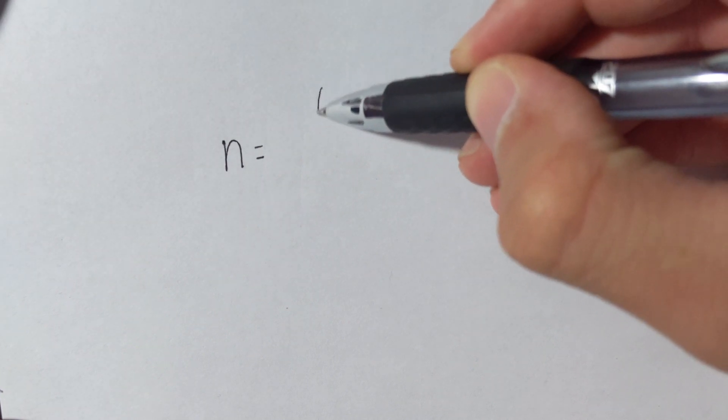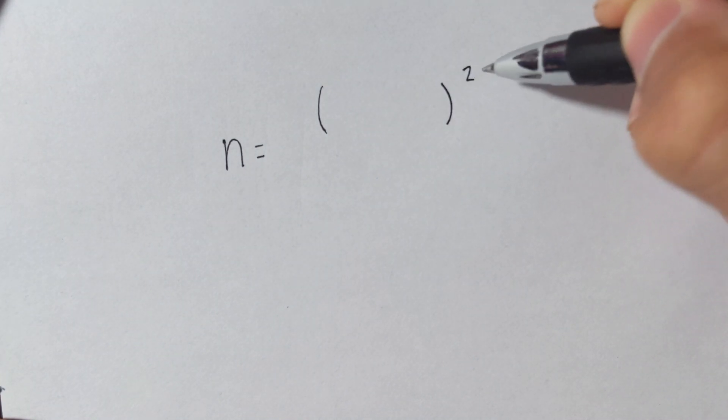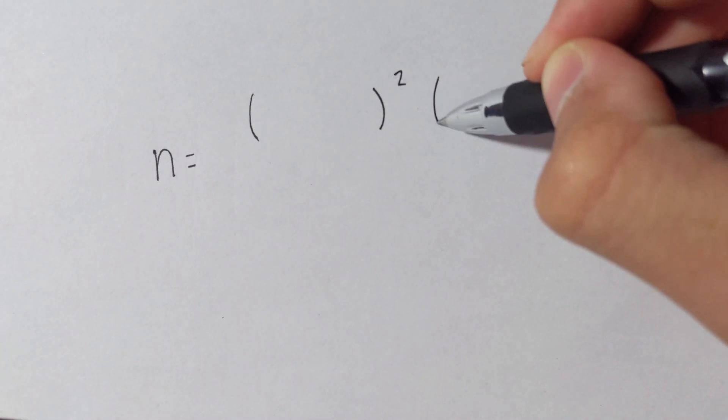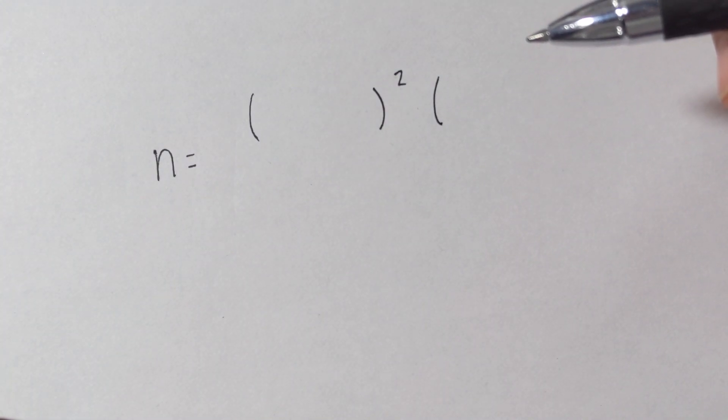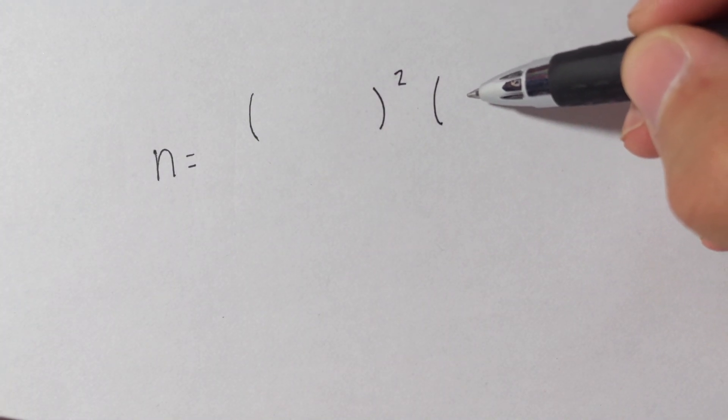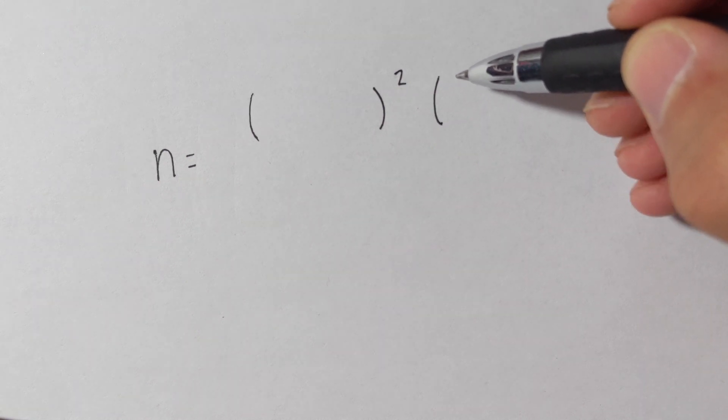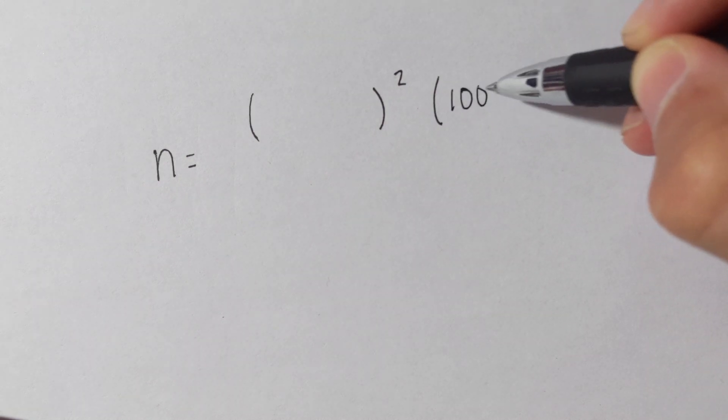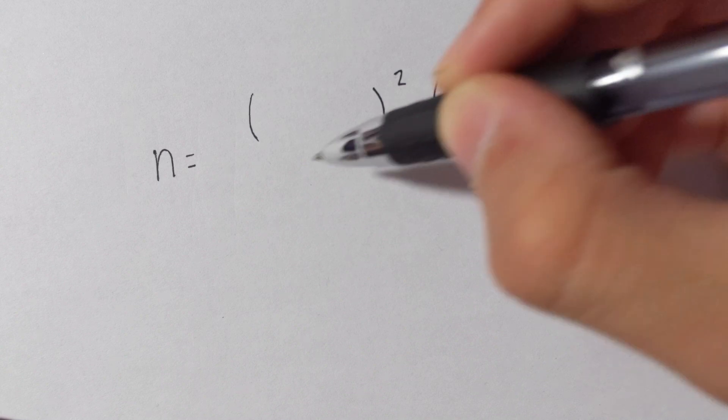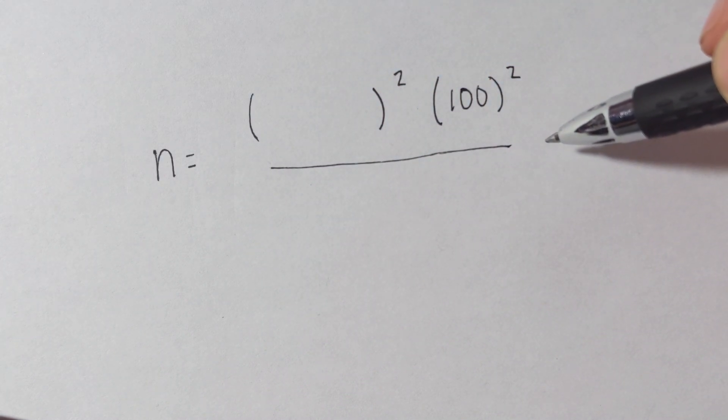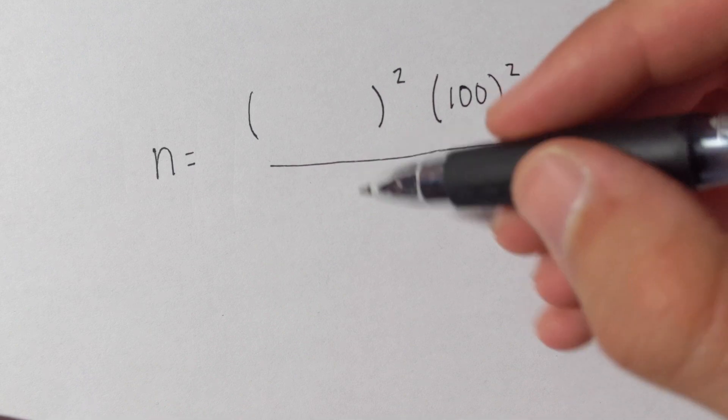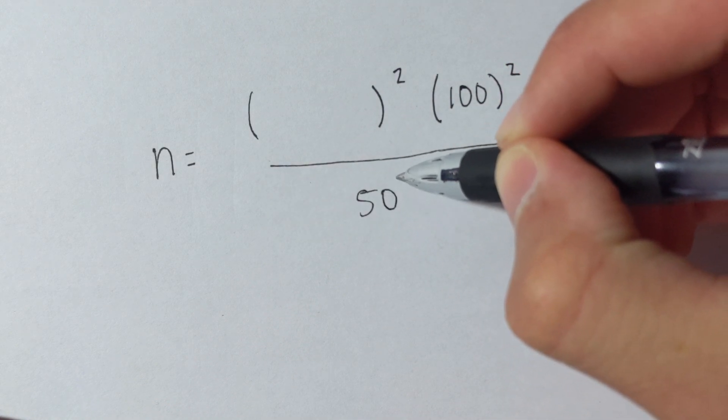So all that you do here, again, this equation, you just take the n is equal, and we'll find this z value here in a second, but it's going to be that squared, and then it's going to be that times the standard deviation squared, and the standard deviation in this case is 100, divided by our error. So we want to be accurate to within $50, so that's where this $50 goes, so $50 squared.